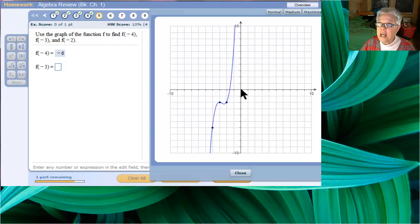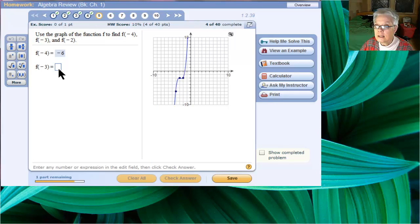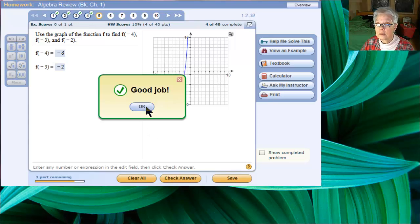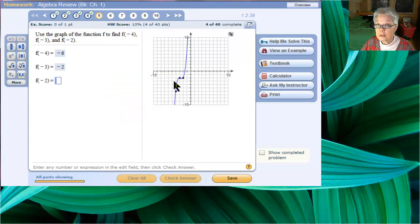Now, f of negative 3. Go to x equals negative 3. Go down to the graph, find the point, and find the y-coordinate. It's negative 2. Now, f of negative 2 has the same y-coordinate, negative 2.